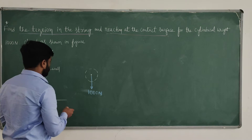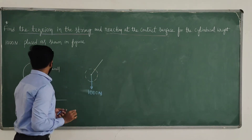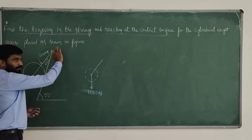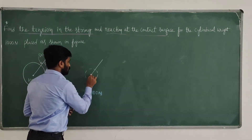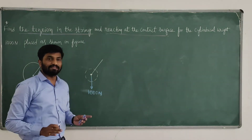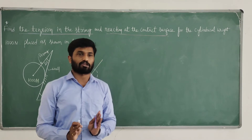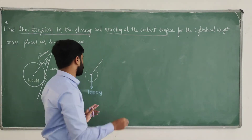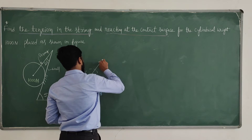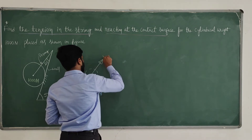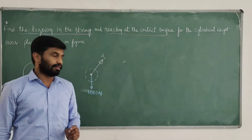Next, this is a string. With respect to the origin, a string always carries tensile force — always tensile force. So it is represented acting away from the origin. This is T, tension.